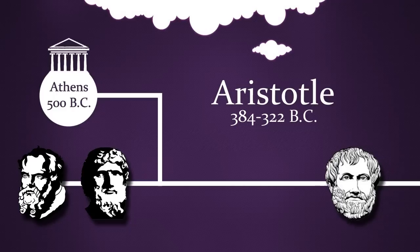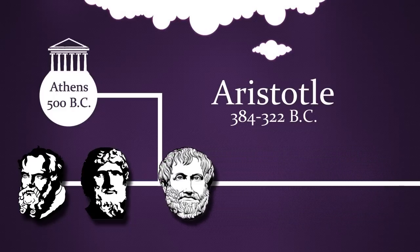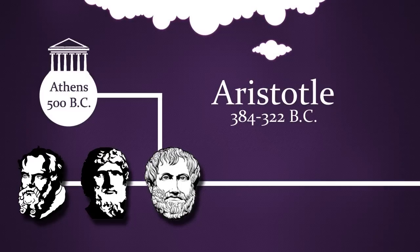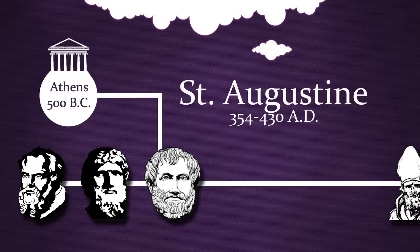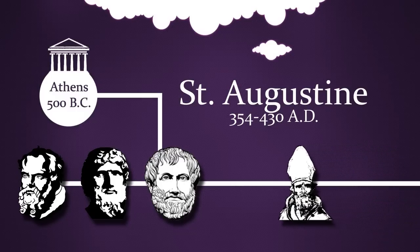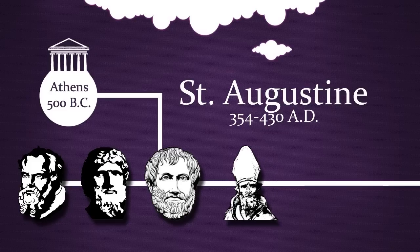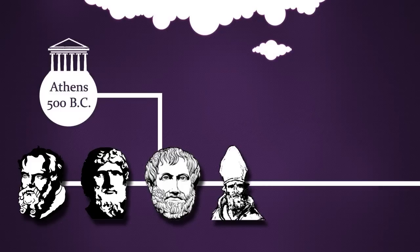Following Plato was Aristotle. He established a lyceum school where he would lecture on subjects including natural history and philosophy. In the same tradition, he stressed goodness and virtue as a part of everyday life. He laid the foundation for formal logic. In the 4th century, Augustine brought classical and liberal education to a wider audience. He encouraged the use of the Greek trivium, which included grammar school, logic, and rhetoric.